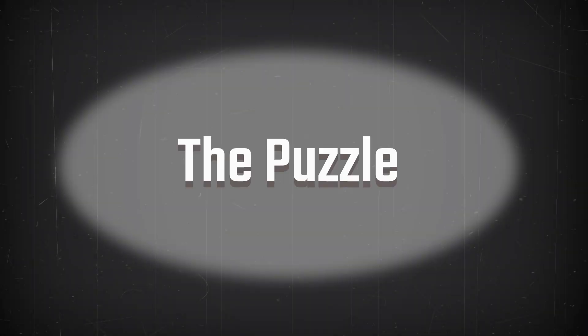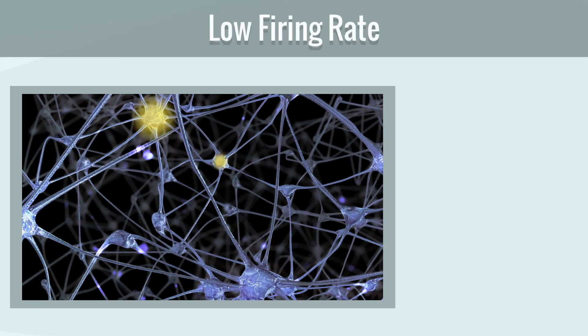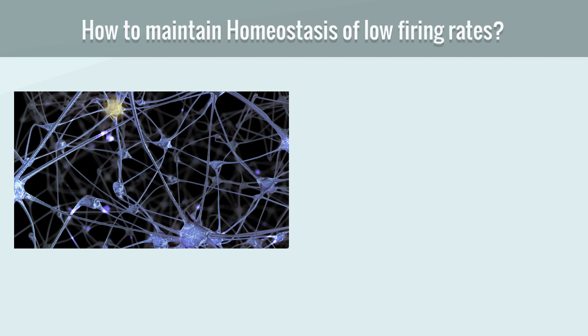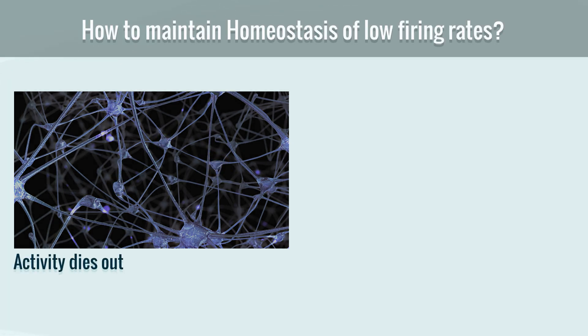What was the puzzle? Neurons have a low firing rate of 1 Hz or below. If each neuron stimulates one or fewer neurons on average, the activity will die out.